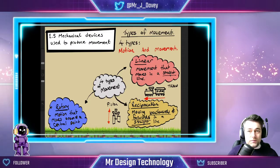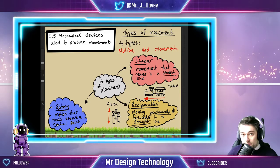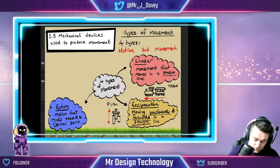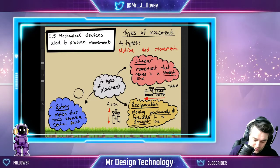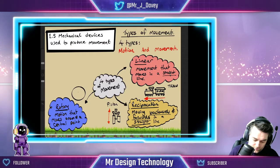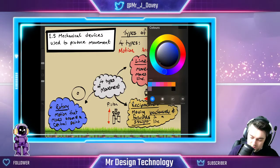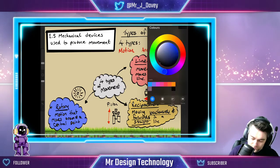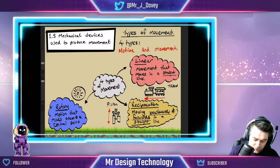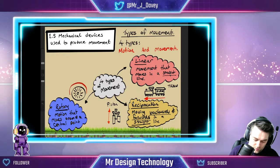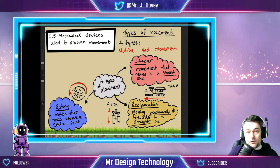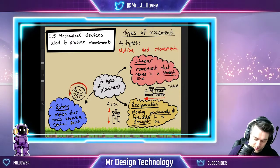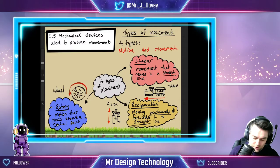You don't have to stick to these colors if you don't want to — it might be useful if you're using this as a revision tool near exam season, but it's entirely up to you. I'll draw a wheel and make it look a bit more like a bike wheel. The movement is going around, so I'll use an arrow to remind me what it's doing.